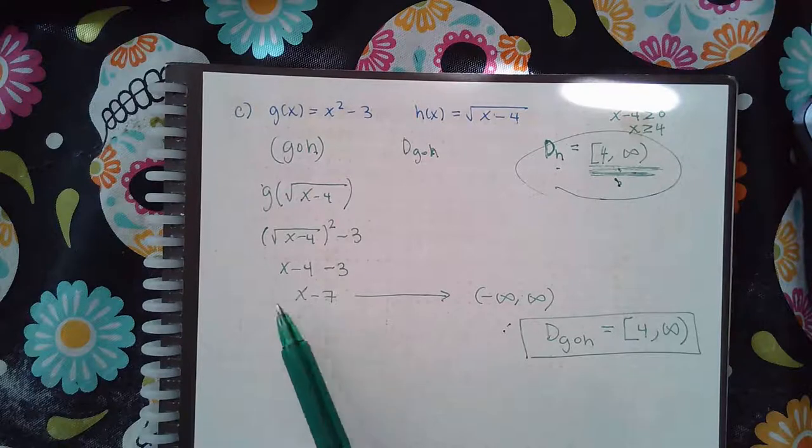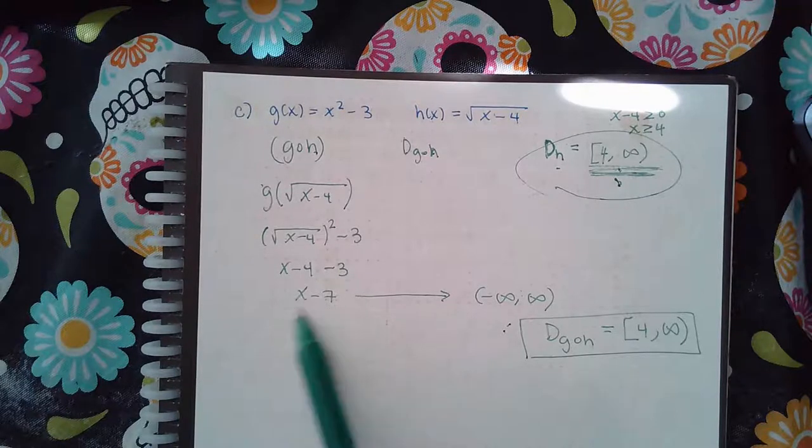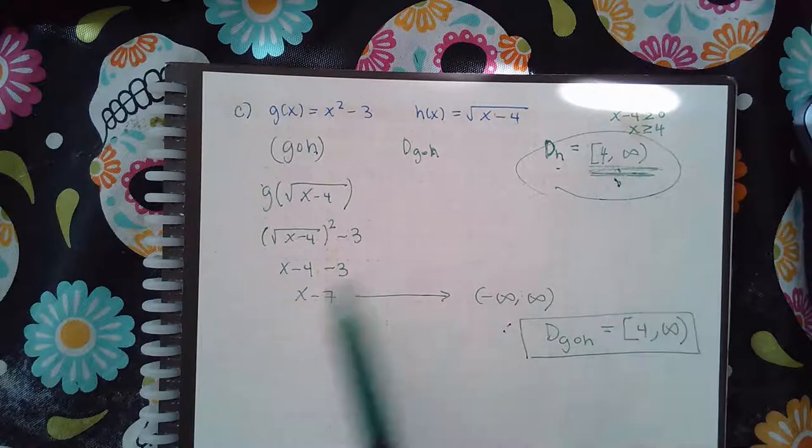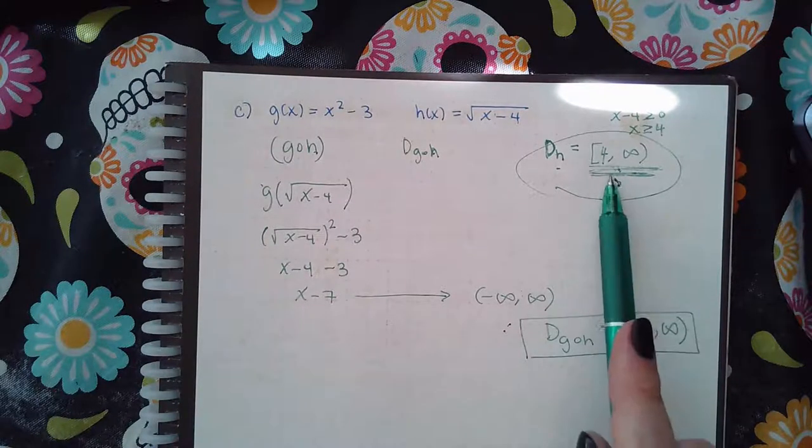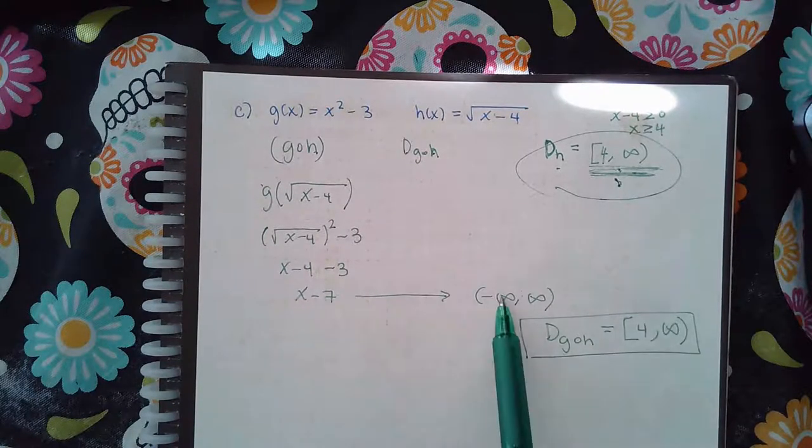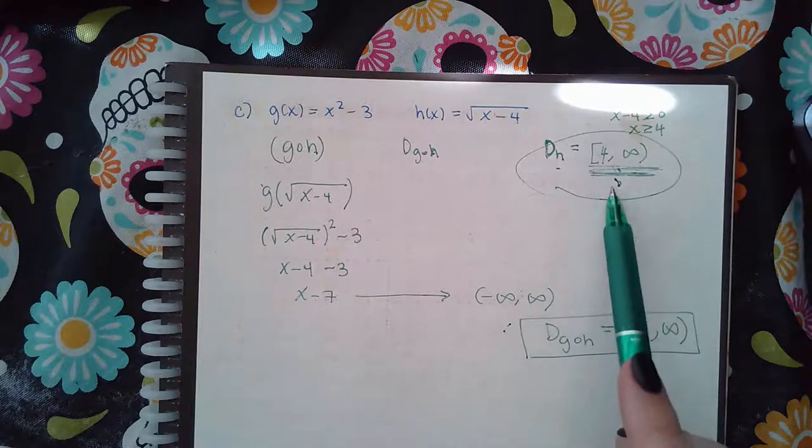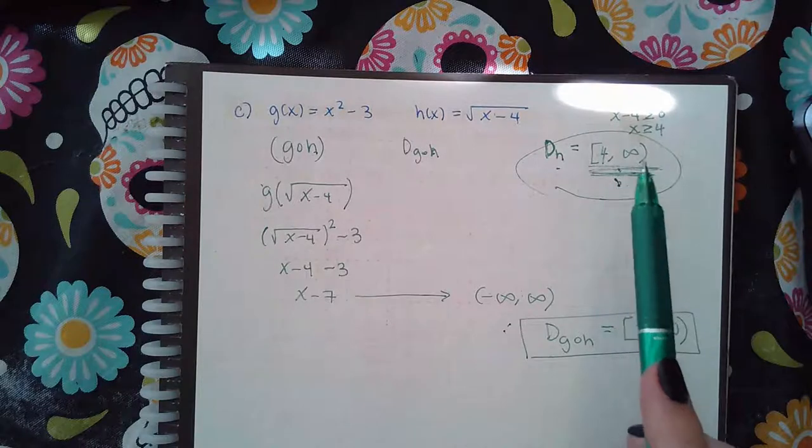However, the only x values that I was ever plugging in here were these x values. Okay? And so it's okay that even though throughout all these x values, this is the kind of answers I could end up with, I still have to just use my potential domain.